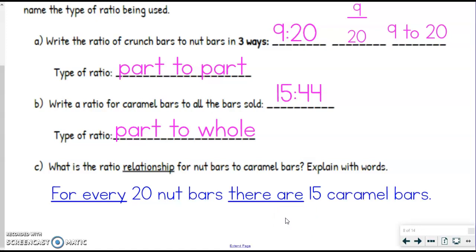So for example, if I doubled it, that means I would have now 40 nut bars and 30 caramel bars, but that again is still saying for every 20, there's going to be 15 caramel bars, right? So there's not going to be as many caramel bars as nut bars, because we always have more of them, or more of those.